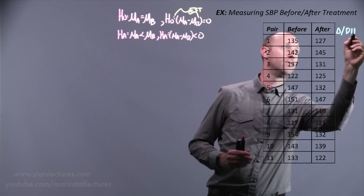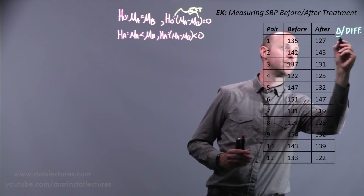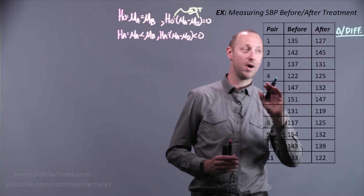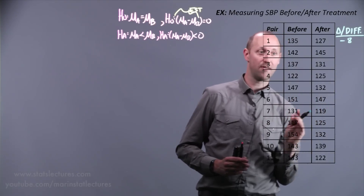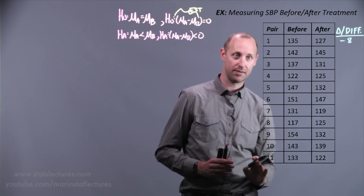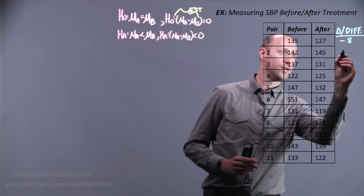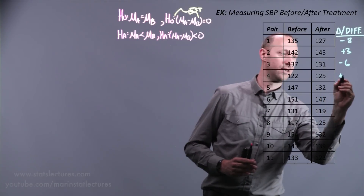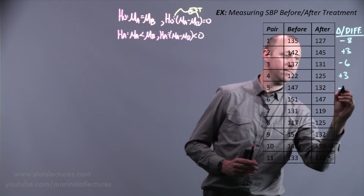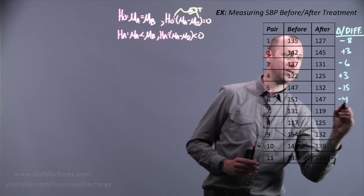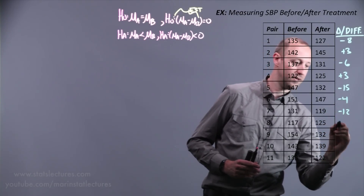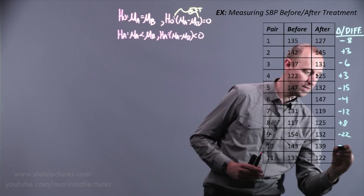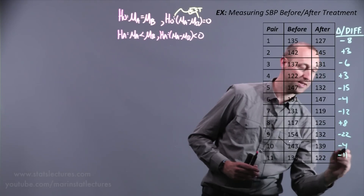Looking at the change — the after measurement minus the before measurement — we get: a decrease of 8 for person one, an increase of 3 for person two, a decrease of 6, an increase of 3, a decrease of 15, a decrease of 4, a decrease of 12, an increase of 8, a decrease of 22, a decrease of 4, and a decrease of 11.